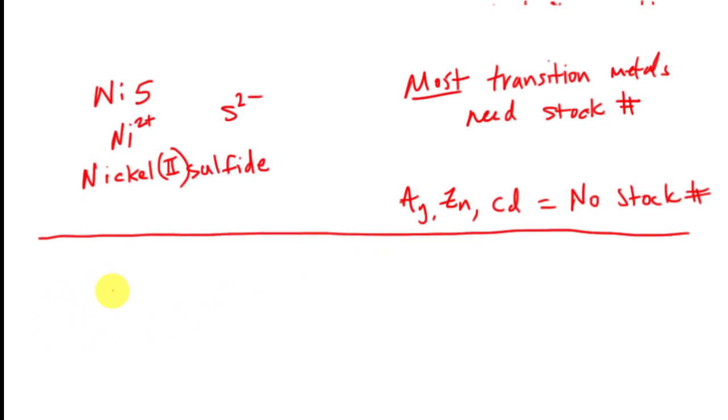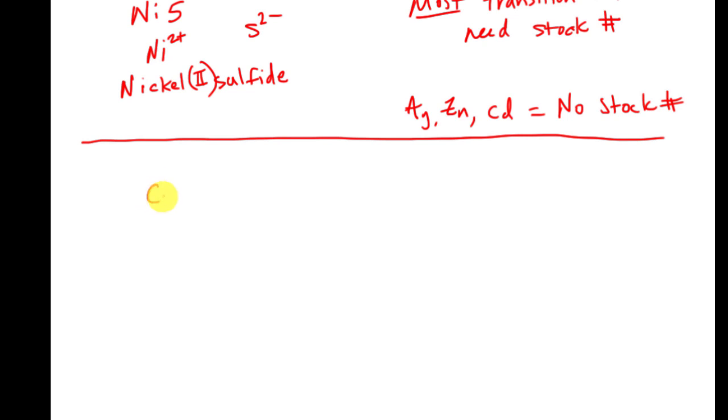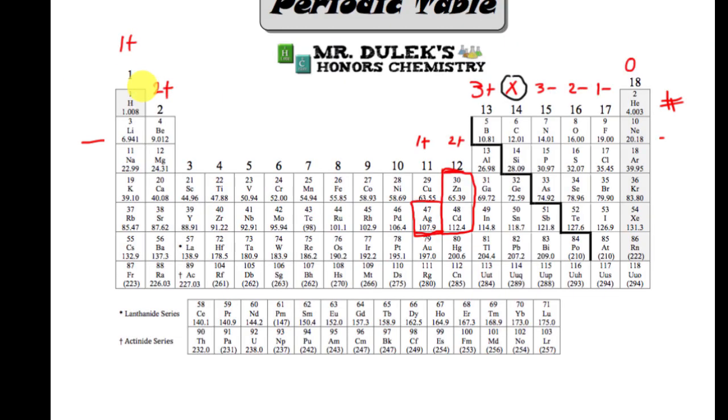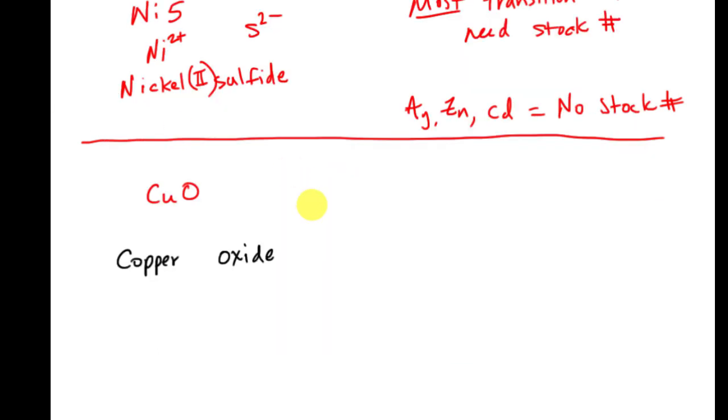is if I give you the compound and I say it's something like copper and we put oxygen here. So if I'm going to name this, I'm going to name it copper. I'm going to leave myself a little bit of space and go oxide. Then I ask myself, is it a transition metal? Is copper a transition metal? I look on the periodic table, and oh, yes it is. It's very close to zinc, silver, and cadmium, but it is not one of those three.